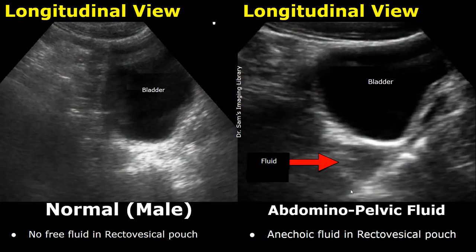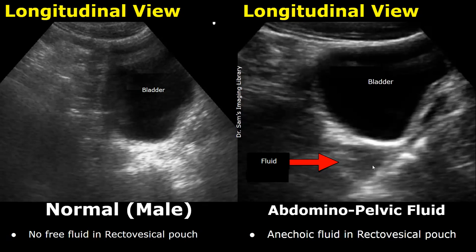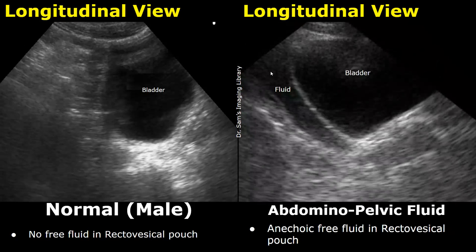This is an image of a male patient. In males, fluid will be seen behind the bladder. In the normal image, no fluid is seen at this location, whereas in a trauma patient, fluid can be found behind the bladder — we can see anechoic fluid with complex areas. Here is another image showing pelvic fluid behind the bladder; this area is known as the recto-vesico pouch.